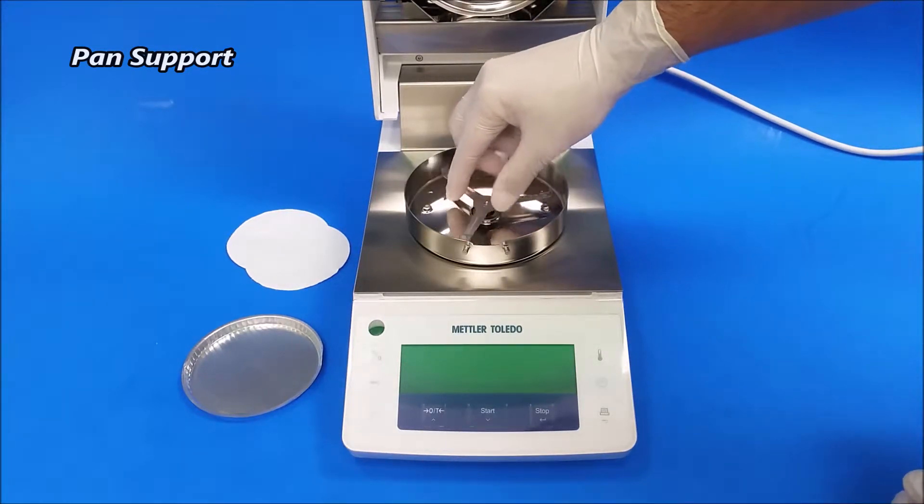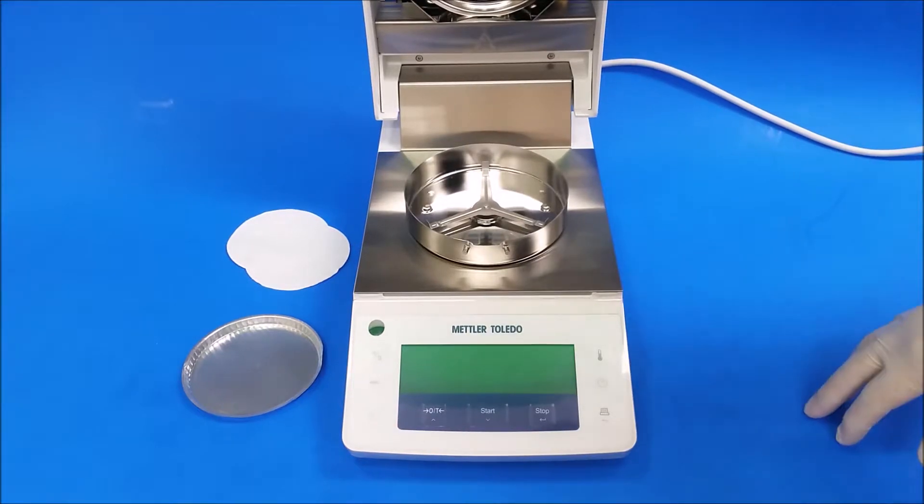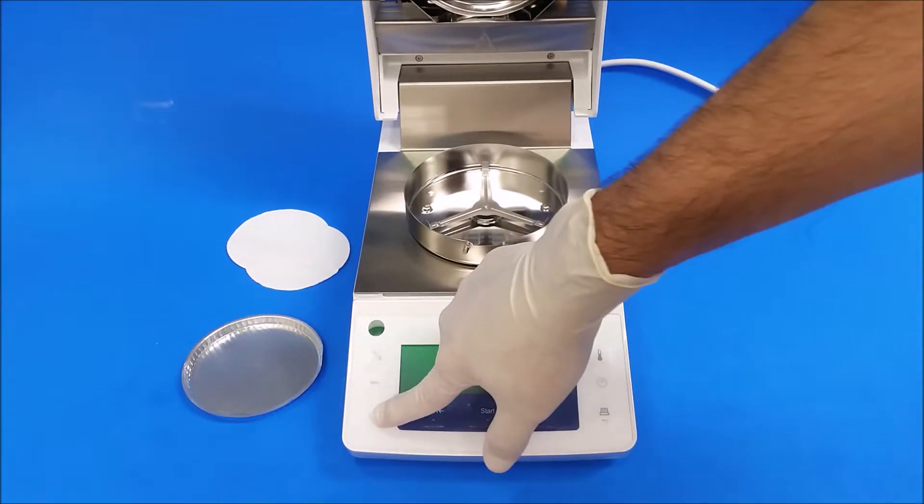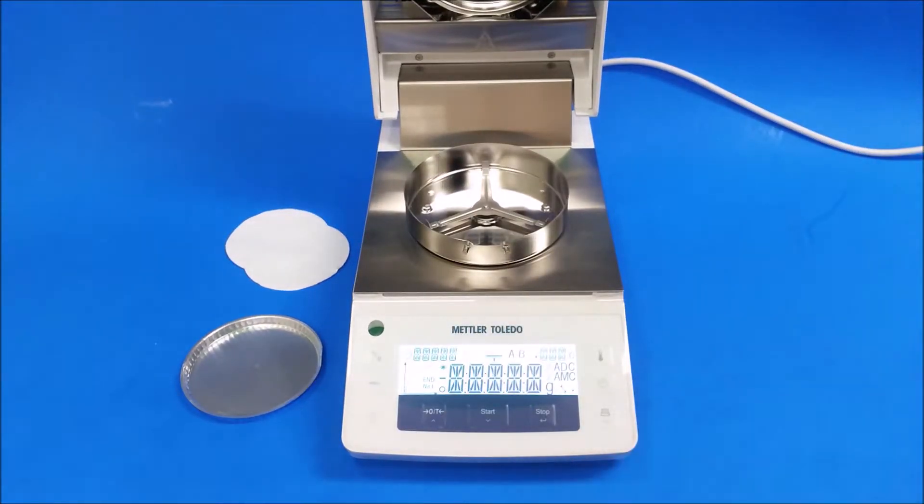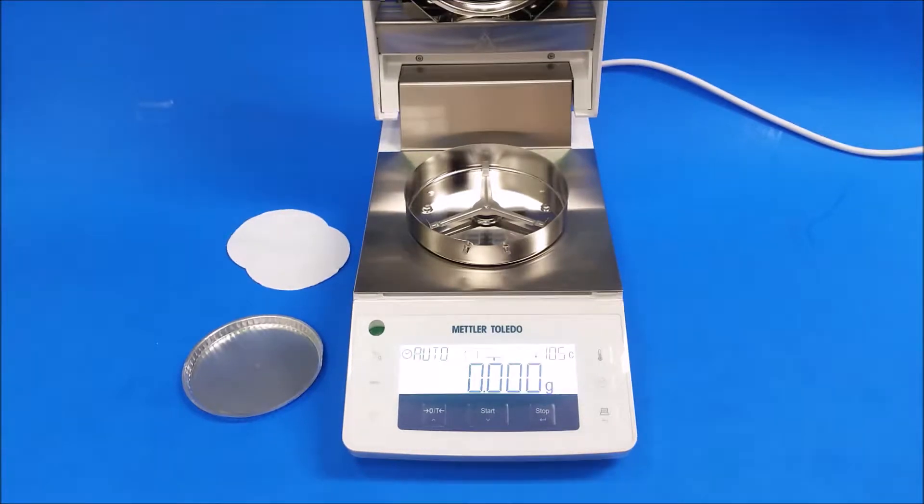And now we turn on our unit. Now the next step is I'm going to set the test parameter settings to my standard solution. It's really simple, it's already on auto, so all I got to do is just change the temp.